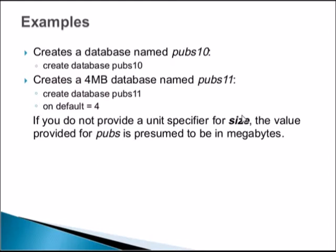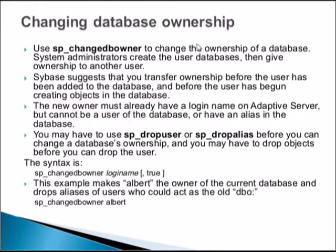Examples: To create a database named pubs10, the simple command is just CREATE DATABASE pubs10 — it will be created on a default device at the default size. To create a 4 MB database named pubs11: CREATE DATABASE pubs11 ON DEFAULT = 4. If you do not provide a unit specifier for size, the value is presumed to be in megabytes.